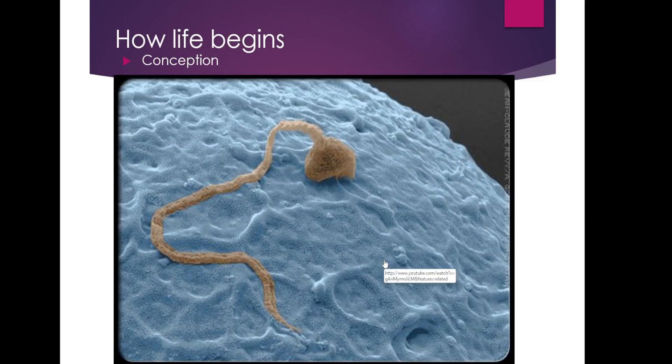How does life begin? Well, it begins at conception, according to our design. Here what we're seeing is an electron microscope image of a sperm penetrating the shell of the egg. And once that happens, the chromosomes in the sperm will line up with the chromosomes in the egg to form 23 pairs of chromosomes, which will then become the DNA of the offspring.